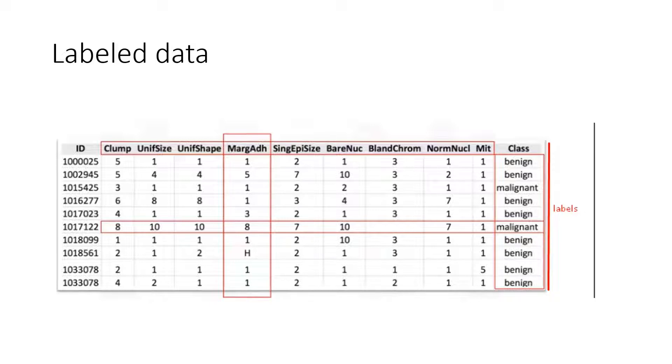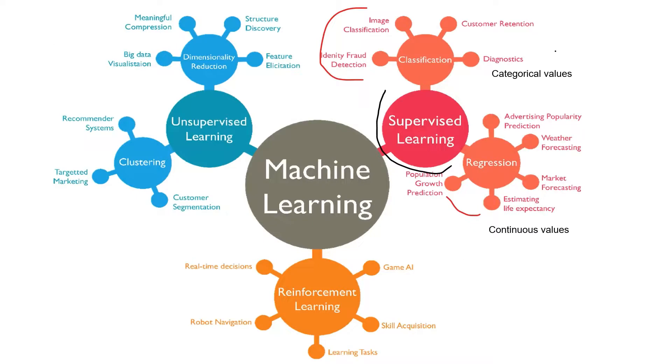Each row is called a record. In supervised learning we have mainly two types: classification and regression. The main difference is that in classification we have categories as labels and in regression we have continuous values as labels. For example, predicting house prices is a regression problem because price is a continuous value. And predicting whether an image is for a dog or a cat is a classification problem because cat and dog are categories.